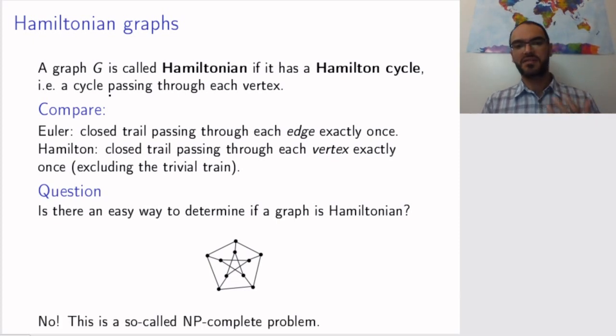It turns out that there is no such easy way. In fact, the problem of determining whether a graph is Hamiltonian is a so-called NP-complete problem. In some sense, this means that the problem has very high complexity, and if you can solve this problem, you can solve any problem.